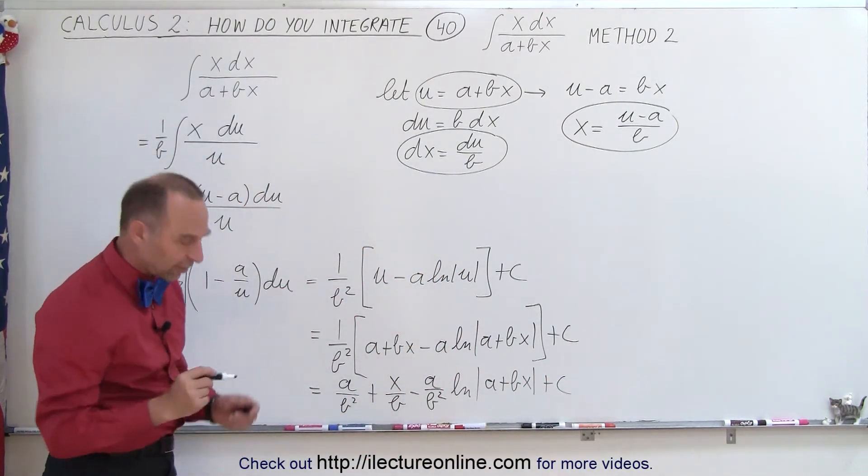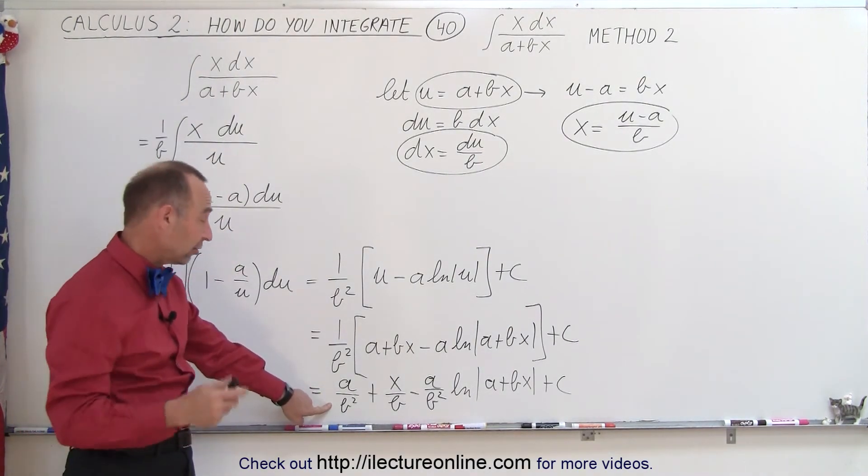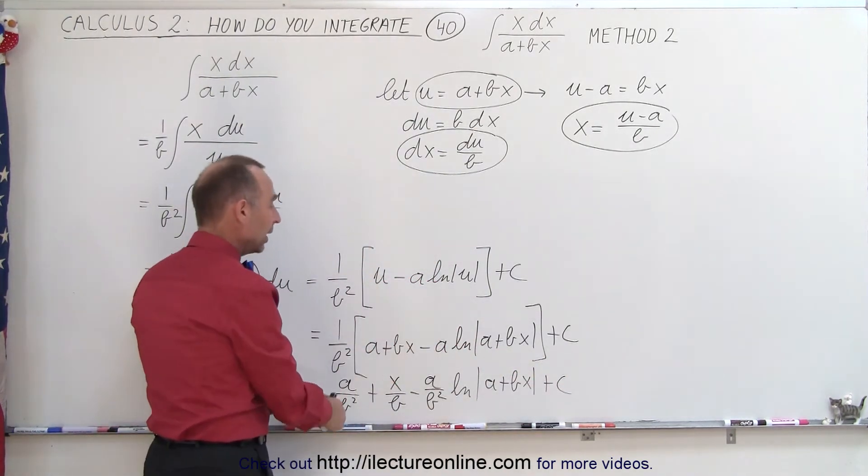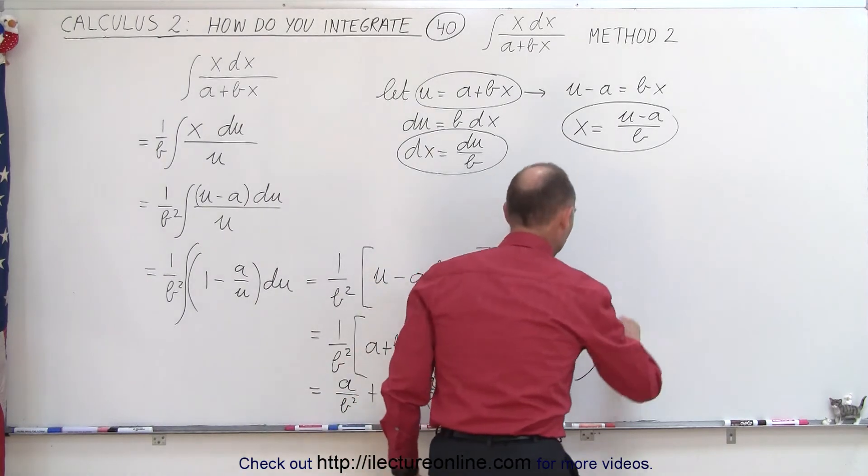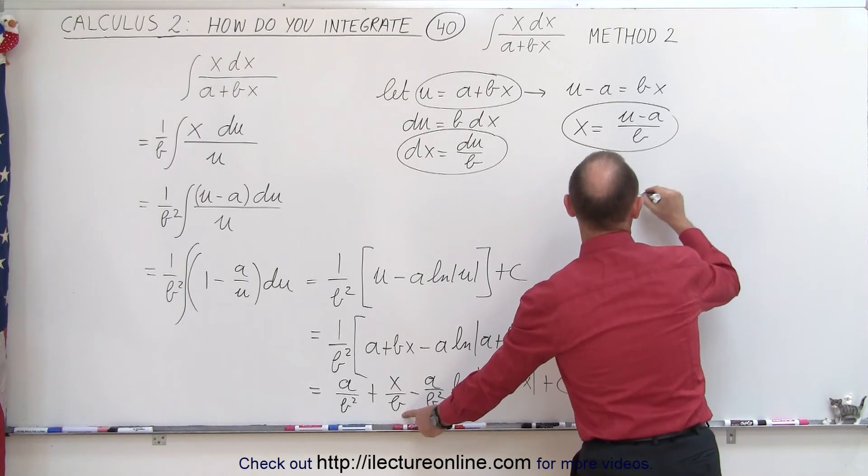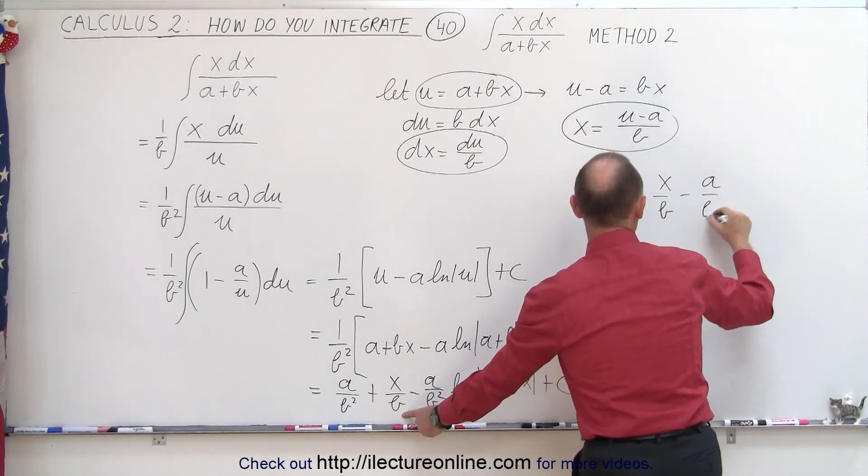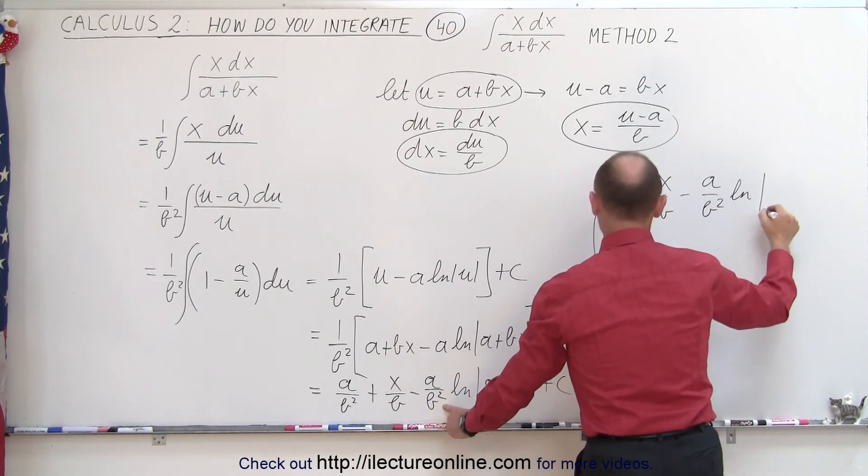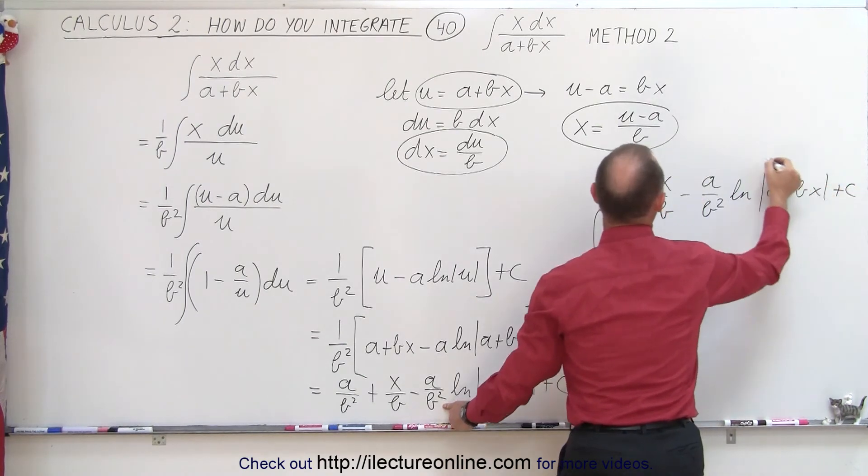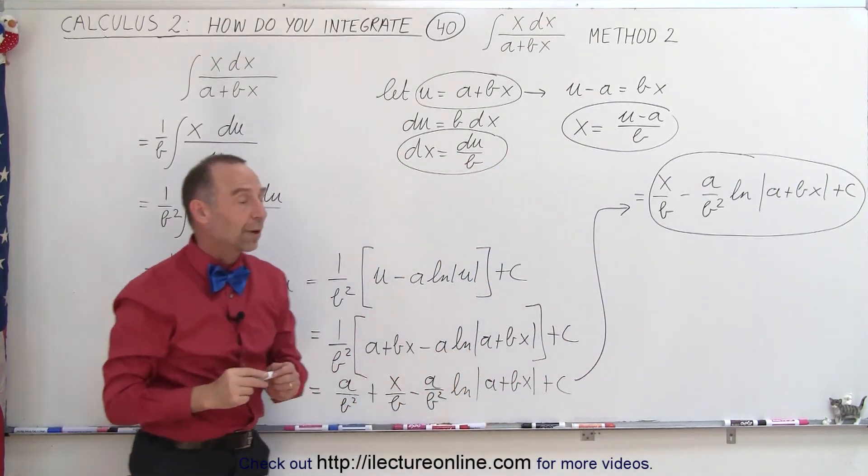And now you say well that's still not the same as what I had before, but if you take a look here a divided by b squared that's a constant. We can take that constant and add it to this constant to make this go away. So then we can say that this becomes added to the constant, so we end up with this is equal to x over b minus a over b squared times the natural log of a plus bx plus a constant of integration. And now if you look this is indeed exactly the same as what we had before.